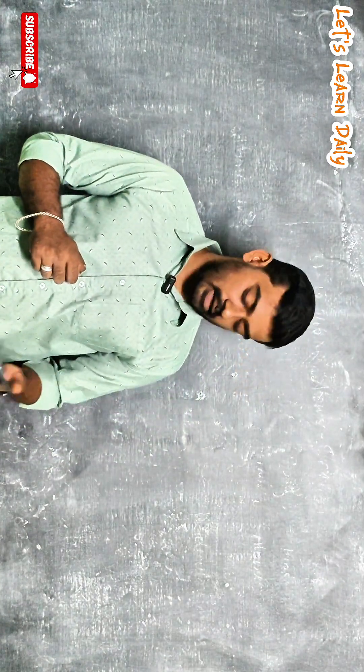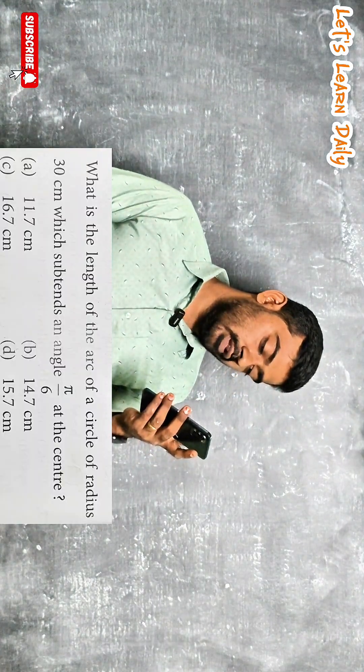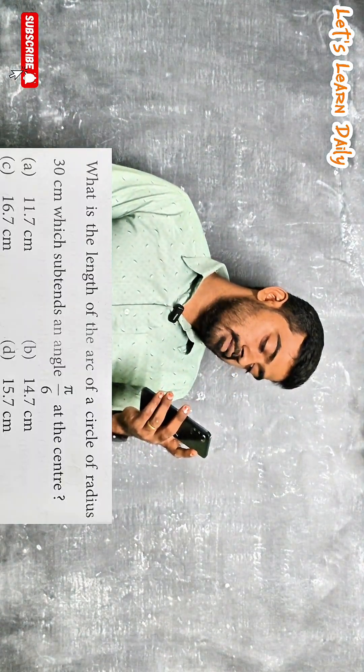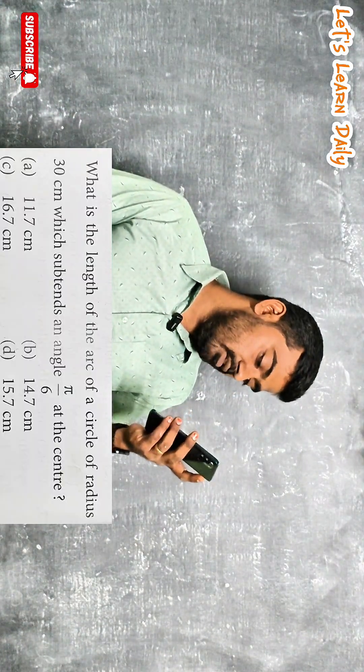Hi students, welcome to our channel. Welcome to the JEE problem: what is the length of the arc of a circle of radius 30 centimeter with subtended angle 5π/6 at the center?